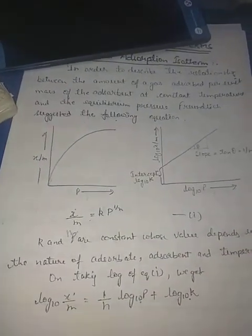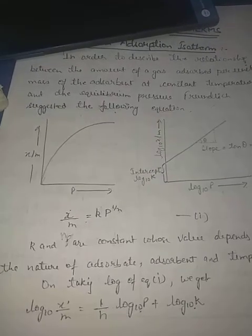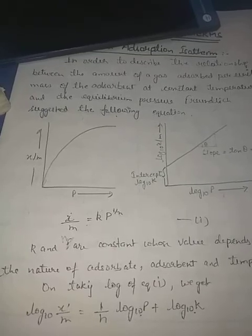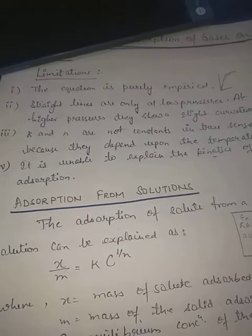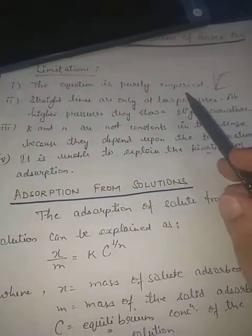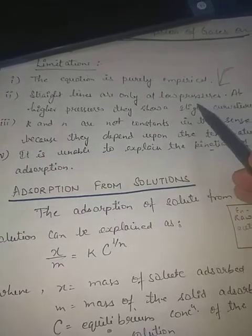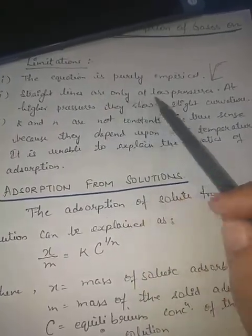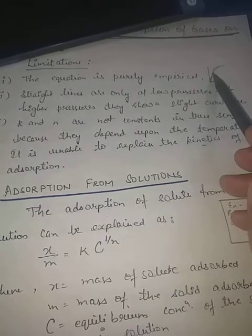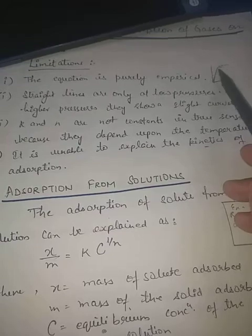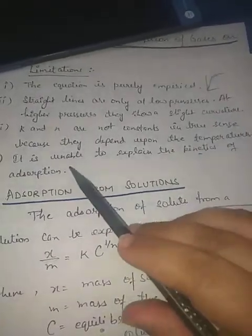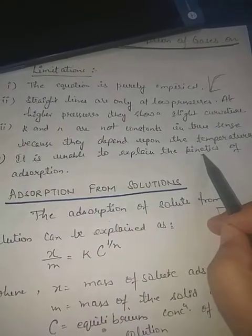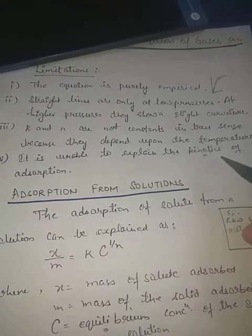These are the two graphs drawn by Freundlich according to the process of adsorption at constant temperature. The limitations of this isotherm are: first, this equation is purely empirical with no theoretical proof; second, straight lines appear only at low pressure and there is a slight curvature at higher pressure; third, K and N are not true constants as they are dependent upon temperature; and fourth, it was unable to explain the kinetics of adsorption — whether the reaction is first order, second order, zero order, or fractional order.